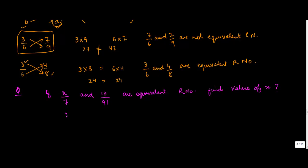You are given two rational numbers, x upon 7 and 13 upon 91, and you are told that both these numbers are equivalent. If these are equivalent, then applying the above property...